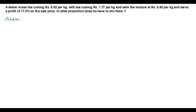We have the following information from the question. The cost price of 1 kilogram of low quality tea powder is rupees 6.92 per kilogram, and the cost price of 1 kilogram of high quality tea powder is rupees 7.77 per kilogram. For the mixture, the selling price is given as rupees 8.80 per kilogram. In this business the dealer makes a profit of 17.5 percent on the sale price. We have to be careful here because usually profit percentage is calculated on cost price, but here the profit percentage is given on sale price.